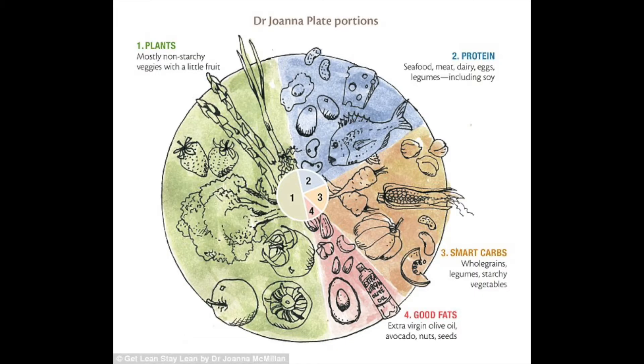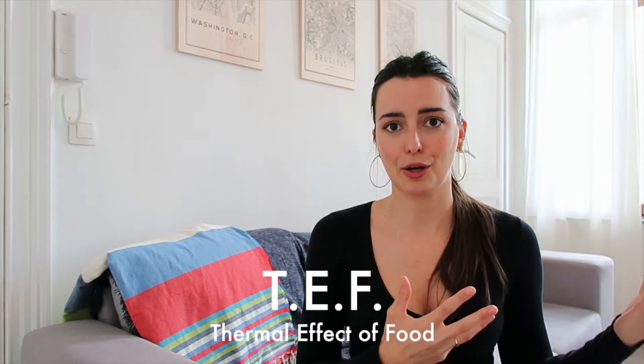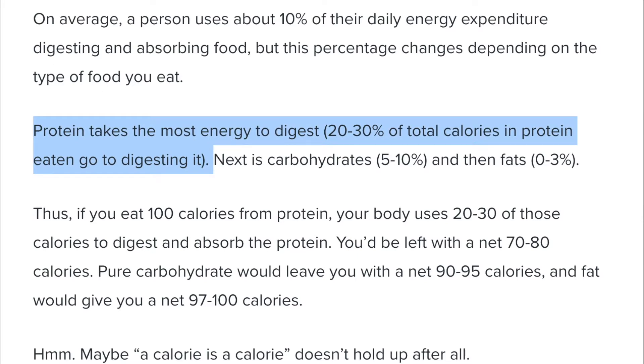The third diet point is your macronutrient profile — protein, carbohydrates, and fat. Each macronutrient is processed by the body differently. There's something known as the thermic effect of food, which is part of the metabolic equation TDEE. Starting with protein: it takes about 20 to 30 percent of its calories just in digestion. So if you eat 100 calories of chicken breast, you're only getting 70–80 of those calories actually used by the body.